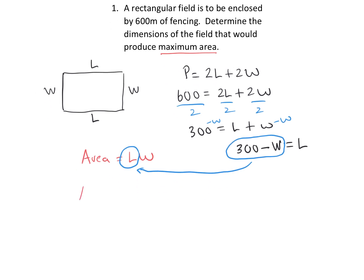Now we have a formula for area: we replace length with (300 minus W) and still have that other W. Expanding gives us W times W, which is negative, so minus W squared, and W times 300 is 300W. So now we have a quadratic equation for area and we want to maximize it.